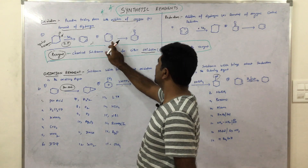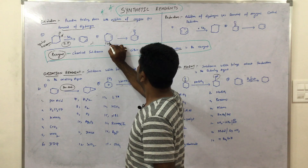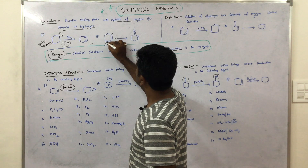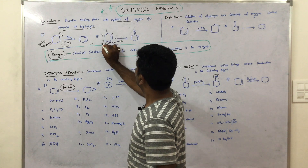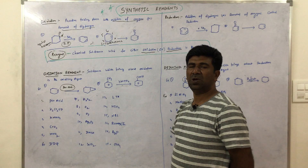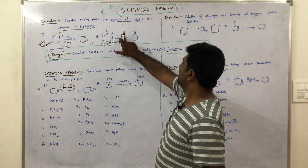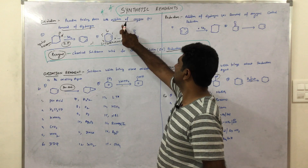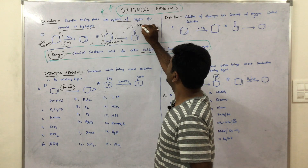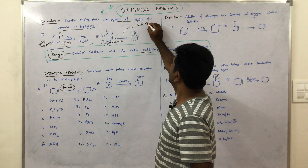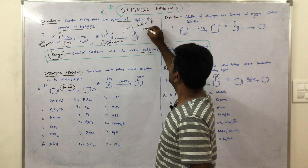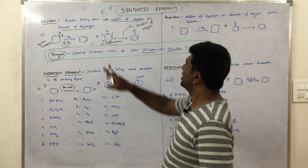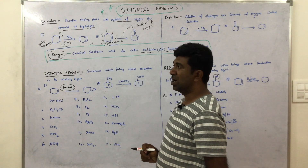Here this is the structure of cyclohexane — a six-membered ring. In the presence of some reagent we get this product — addition of oxygen. This is the example for addition of oxygen, and that is the example for removal of hydrogens. Both are oxidation.